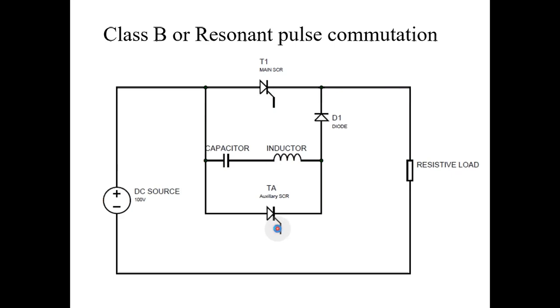After firing of auxiliary thyristor or TA, capacitor current flows from right side plate through auxiliary thyristor, through inductor and back to capacitor. This will charge capacitor in the reverse polarity than that of previous. That is capacitor will get right side plate positive and left side plate negative. This will reverse bias the auxiliary SCR that is TA and auxiliary SCR will commutate.